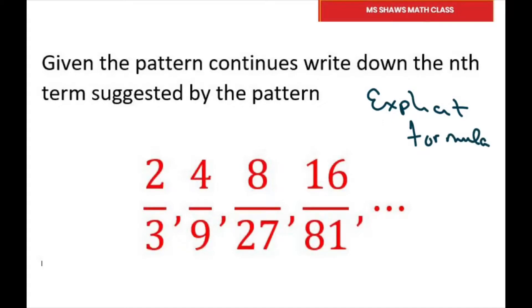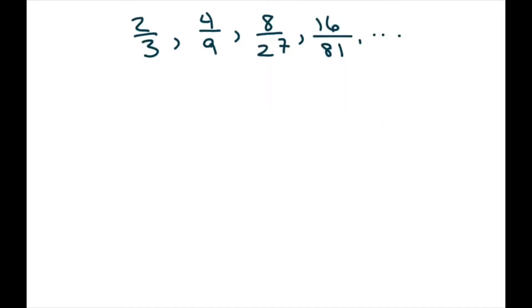The first thing I want to do is label these in terms of index numbers. I want to write this down as my first term, this is my second term, my third term, and my fourth term.